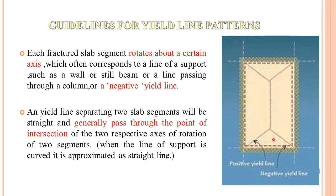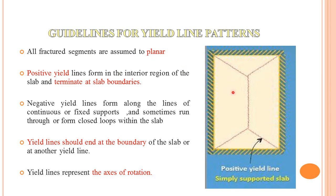The second guideline states that the E-Line separating two slab segments generally passes through the point of intersection of two axes of rotation. All fractured segments are considered to be planar. The positive E-Line forms at the interior region of the slab, not at the exterior, and it forms in the region of positive moment — that is, in the sagging region.